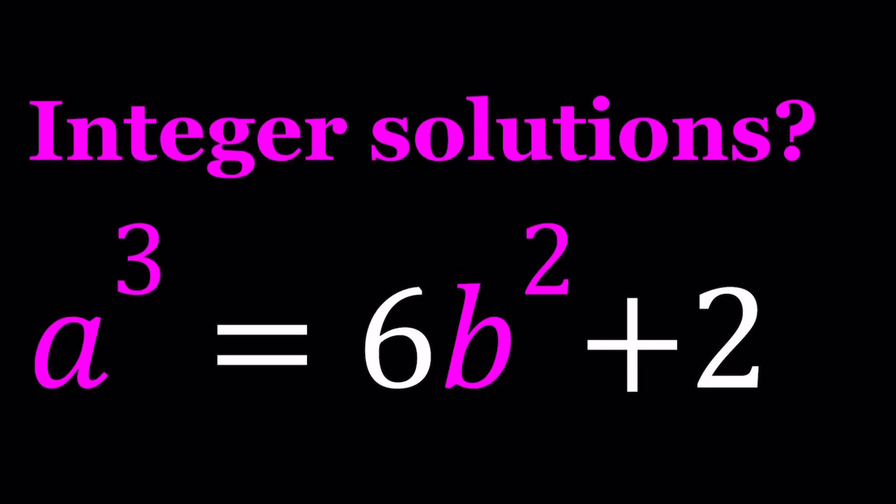Hello everyone. In this video, we're going to be solving a Diophantine equation from Polish Math Olympiads. We have a³ = 6b² + 2, where a and b are integers.